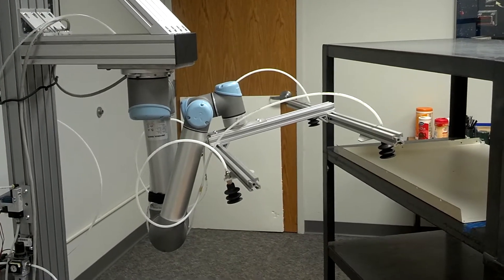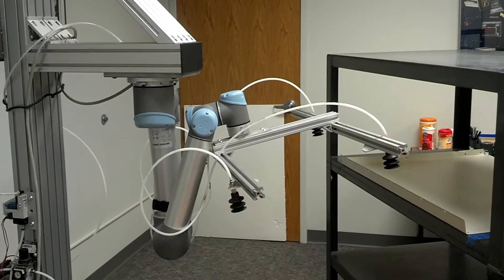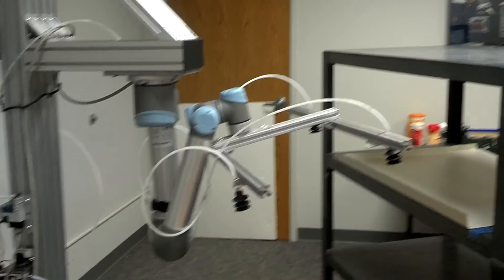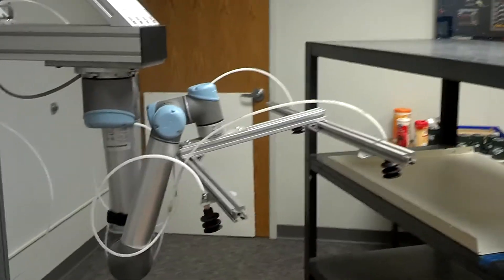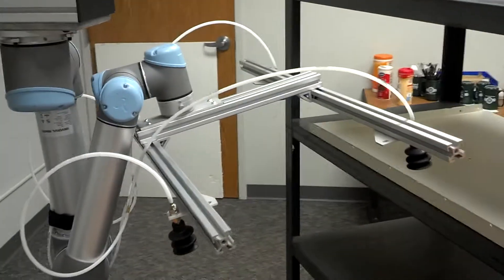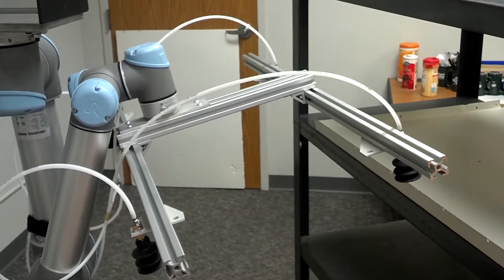Here we have the Universal Robots UR-5 set up to simulate a press unloading application. As you can see it's hanging upside down and we have fabricated a simple H-frame end effector.